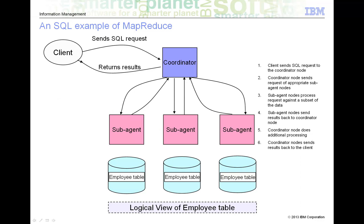Let's look at an analogy to understand the concept — for the moment, forget about Hadoop. Let's look at the MapReduce paradigm in something more familiar: a relational database. Since this is an IBM course, DB2 will be used in this example, but any other relational database management system closely follows suit. Assume that you have a massively parallel processing database environment, similar to a Hadoop cluster in that you have multiple machines or nodes working together.